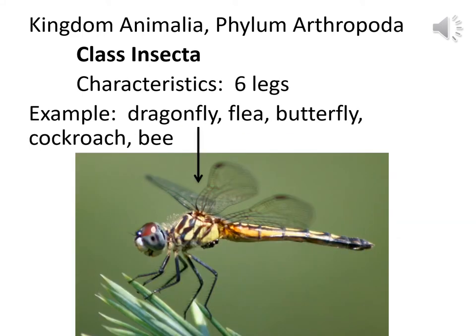Dragonflies, fleas, butterflies, cockroaches, bees, etc. would all be in Class Insecta. These guys are going to have six legs. Most of them have the parts to make wings — some of them know how to use them, some of them don't. Cockroaches do actually have wings; they don't really know what to do with them. But all of these guys would have the parts to make wings, though we'll concentrate on the six legs.